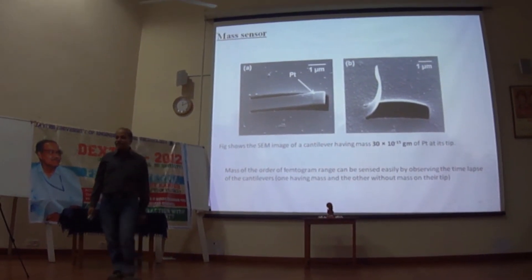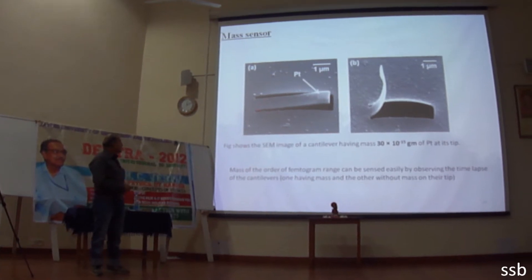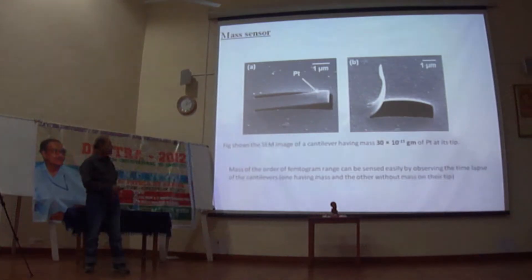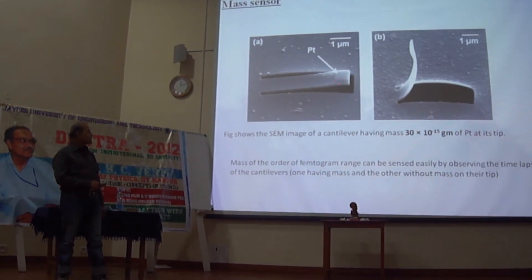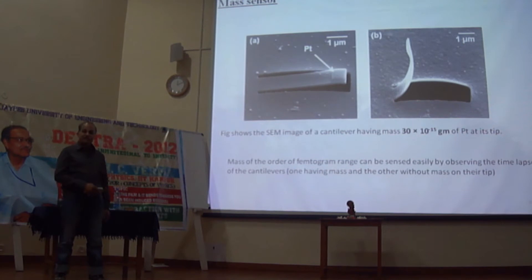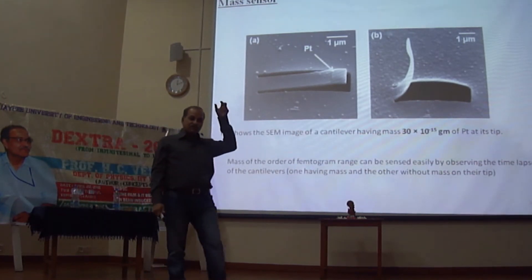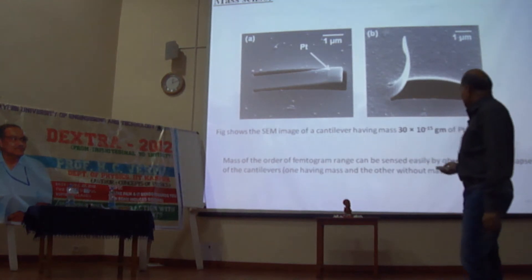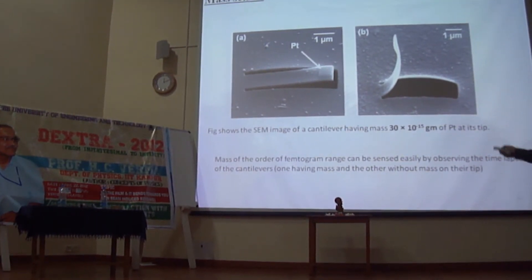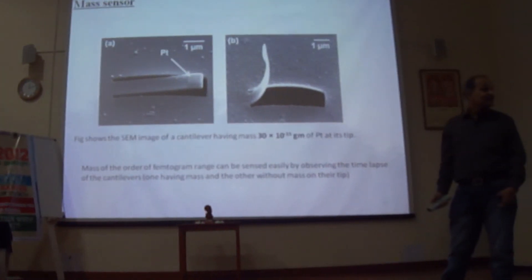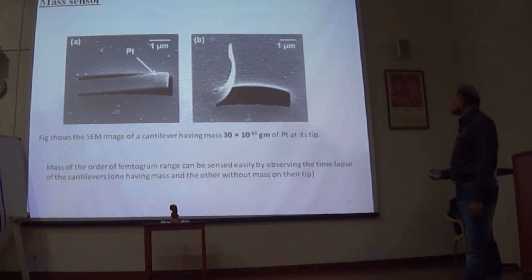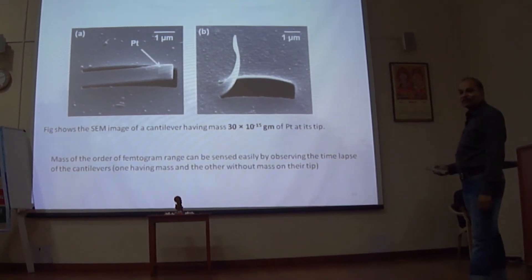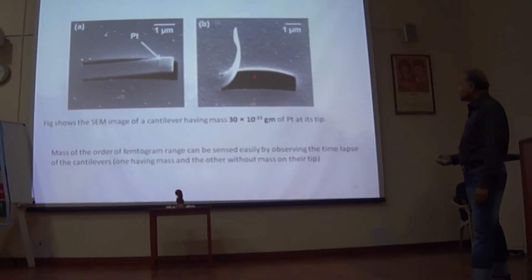Here is one application we have suggested. This is a cantilever, and on this cantilever we have deposited, again using FIB, a platinum mass. The platinum mass deposited has a mass of about 30 femtograms, estimated from the deposition time and rate. About 30 femtograms is deposited, and then we have bent it using the gallium ion beam. A cantilever without the platinum load bends fast, and if the load is there, it goes slow.